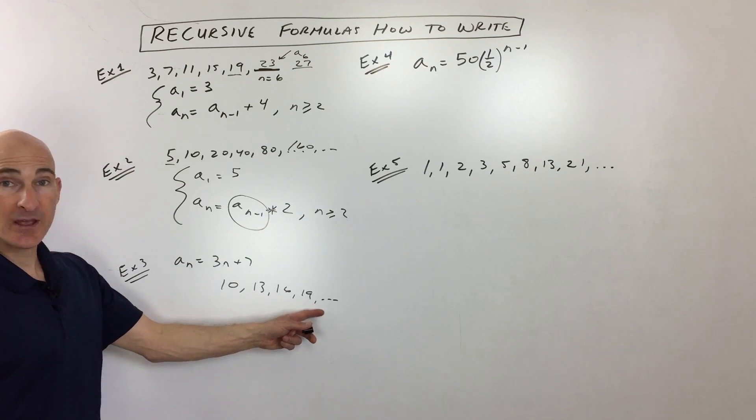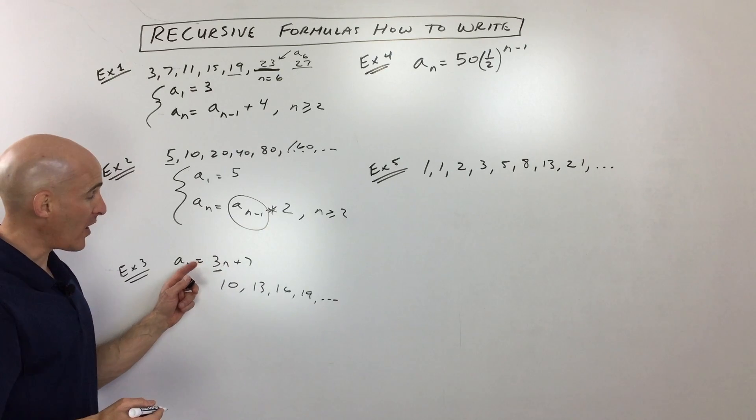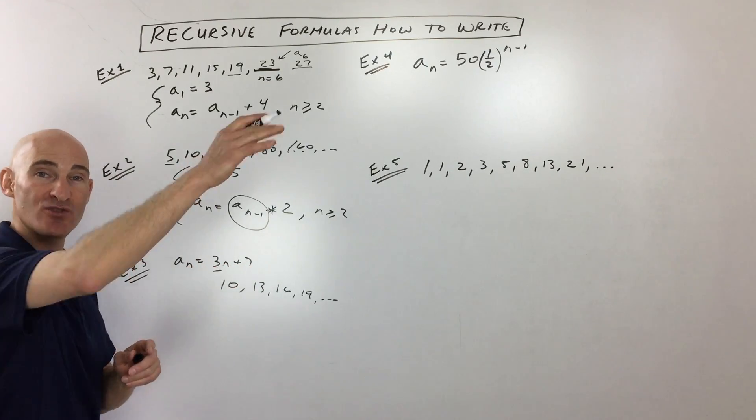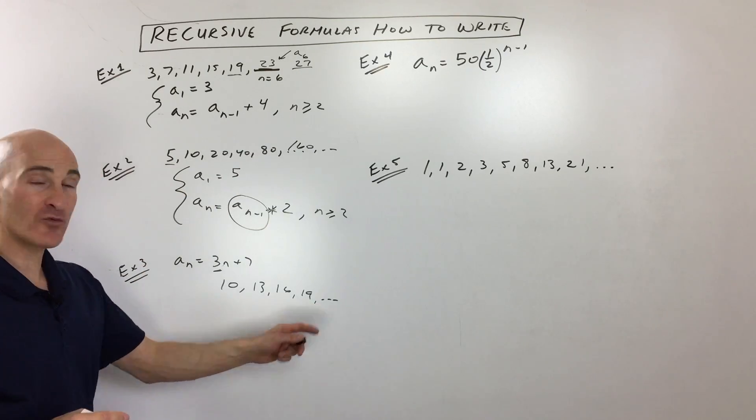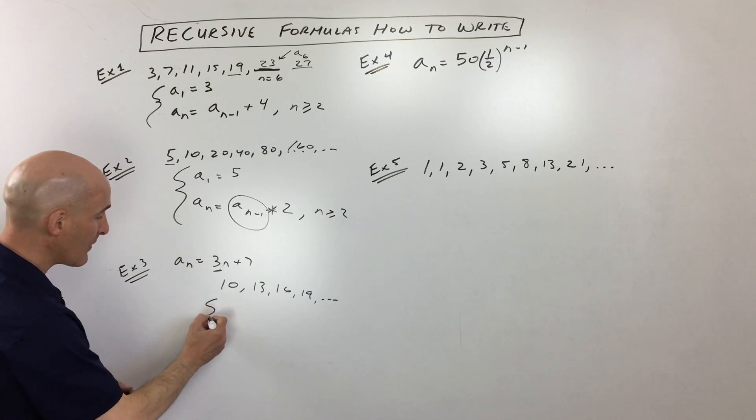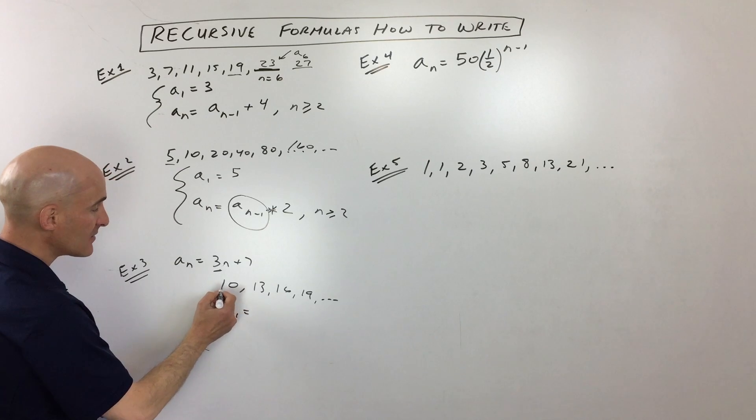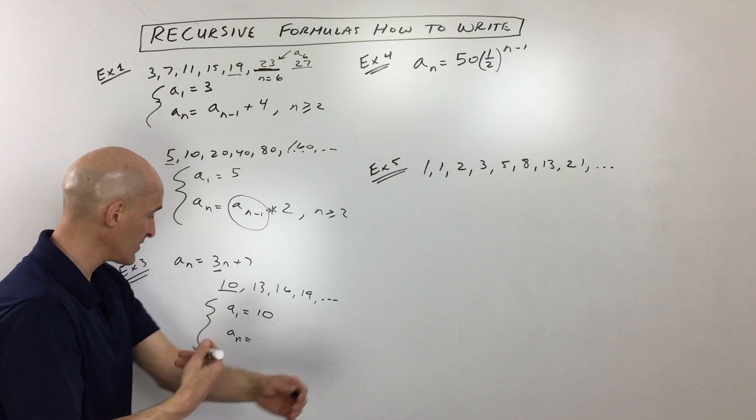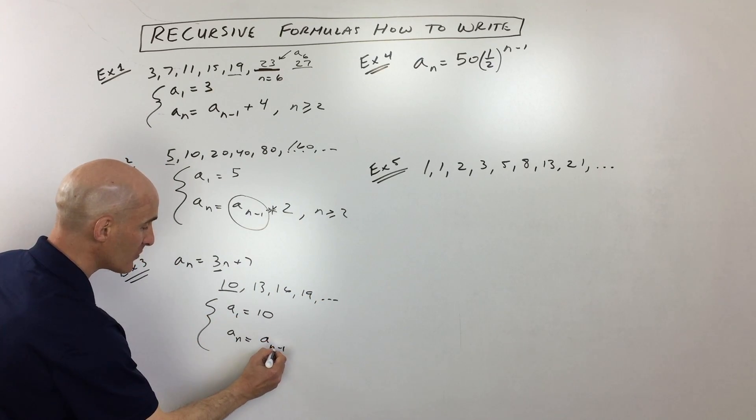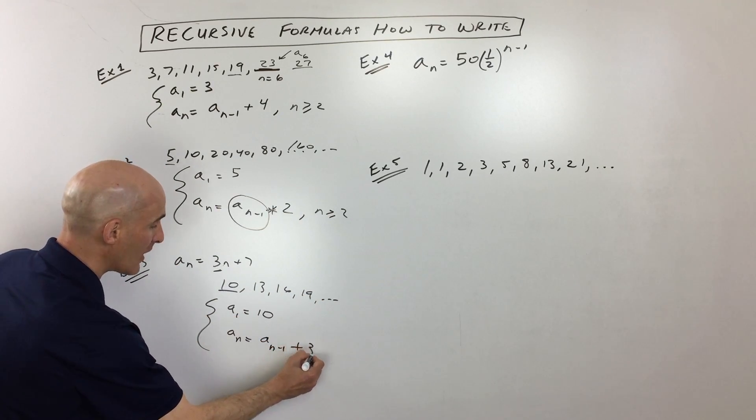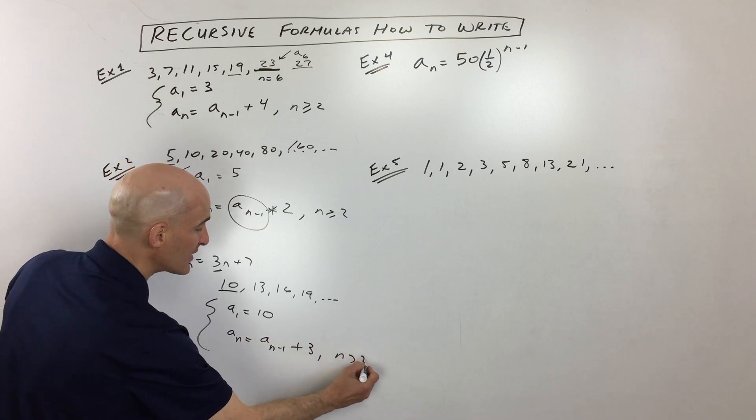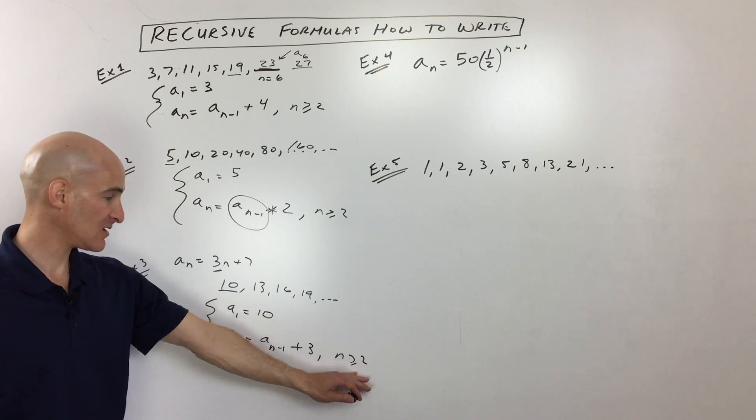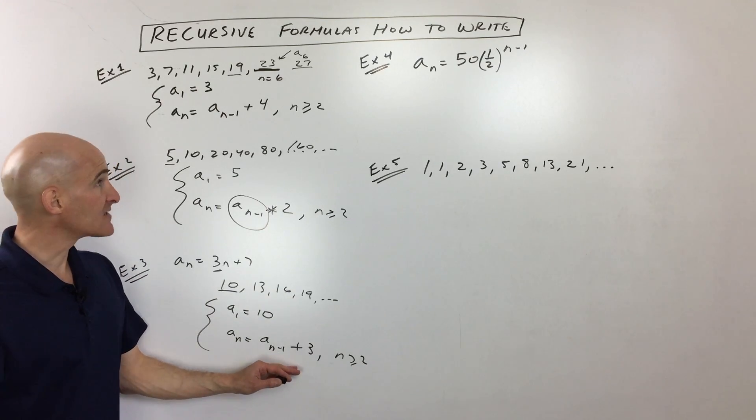So now you can see the pattern. It looks like we're adding 3, which makes sense because see how this is like a line, like y equals 3x plus 7. The slope is 3, it's increasing by 3. But if you want, you can write out a few terms. A lot of students like to do that method. And then a sub 1 is the value of the first term, which is 10. And then what we want is a formula to find the next term in the sequence. You take the previous term, a sub n minus 1, and you add 3. And then this is just for when n is greater than or equal to 2.